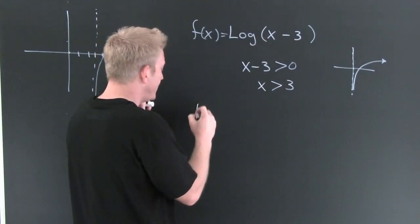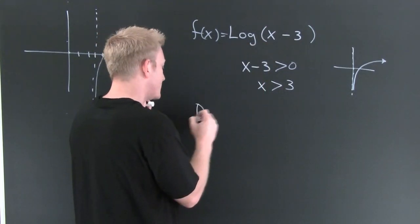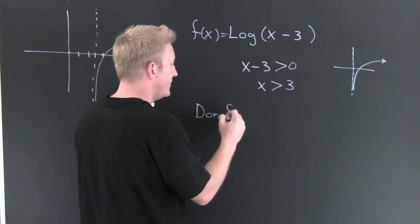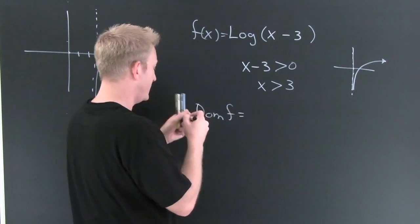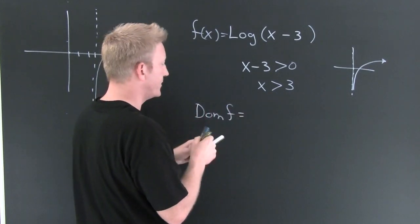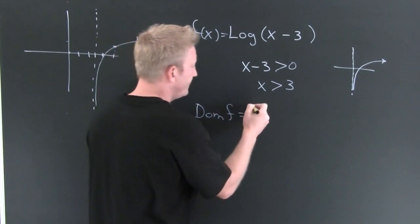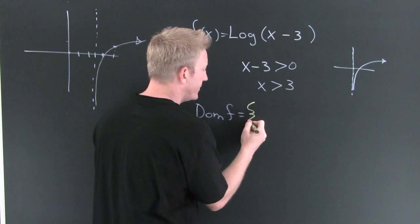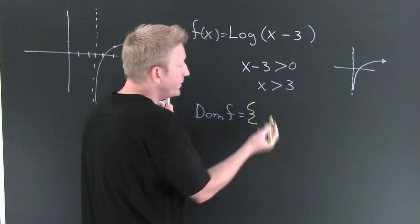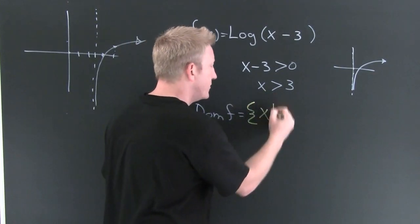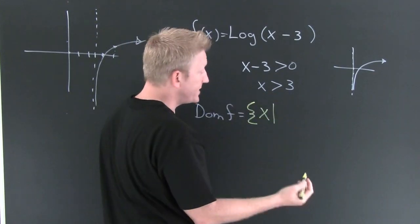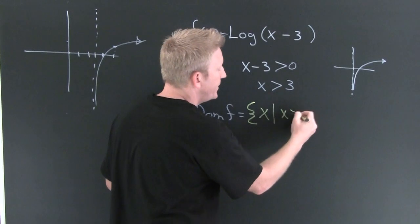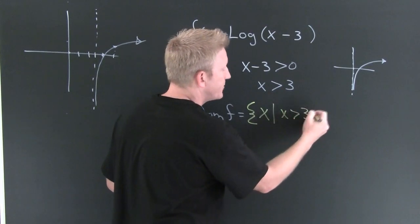So we'll write it up in nice curly braces. The domain of f is: the set of x where x is bigger than three.